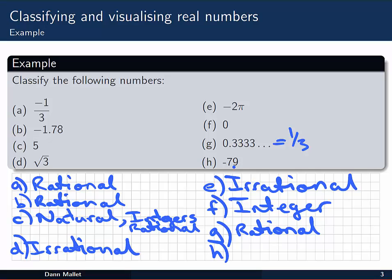And finally in h, minus 79, that's just a negative of a counting number, so that's an integer.